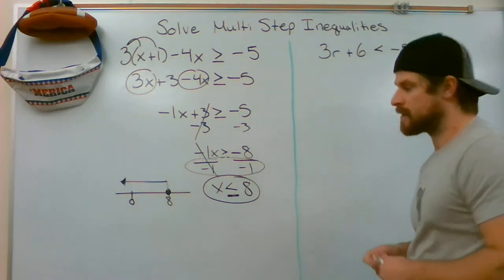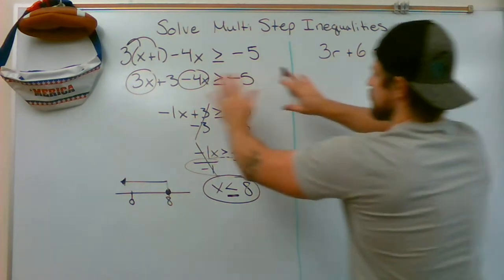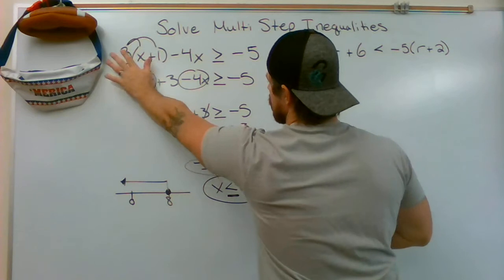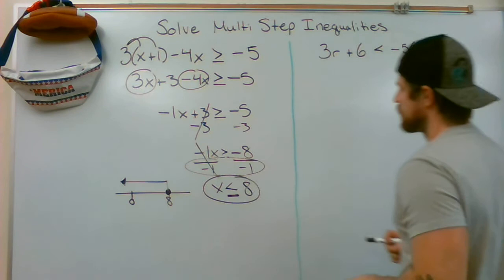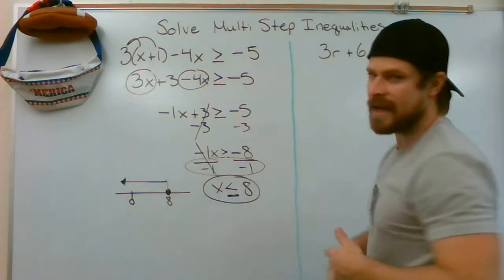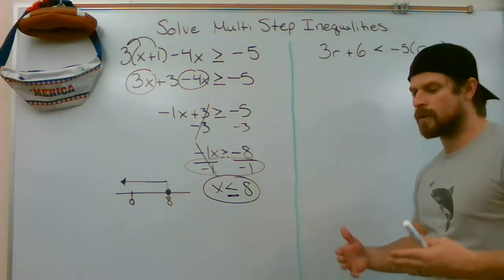Here I have variables on both sides. That's what's different from this problem. This problem, variables were all on the left, and I had to simplify things down before I used my inverse operations. Here I have r on the left, I have r on the right. What do I need to do there? Same rule applies.